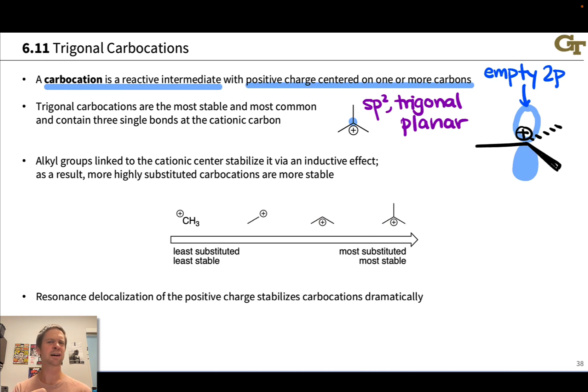This is more or less an inductive effect. Those alkyl groups are inductively donating, and so they donate electron density to the cationic center, spreading out the positive charge on some level and stabilizing the cation. So more substituted cations are more stable. Very important point to keep in mind.